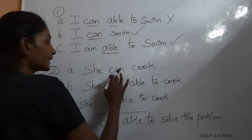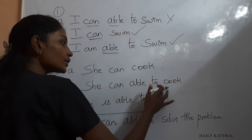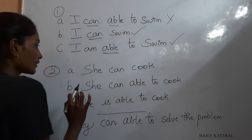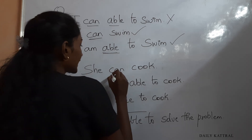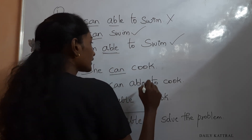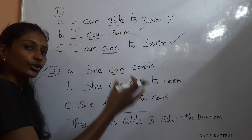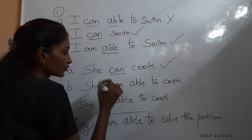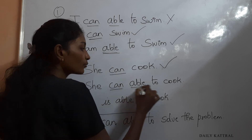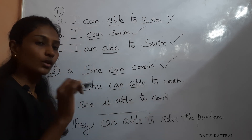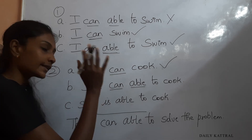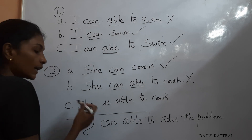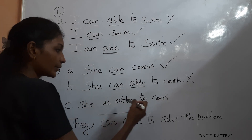Second question: Option one — 'She can cook' — correct. Option two — 'She can able to cook' — in one sentence you should use only 'can' or 'able,' not both together, so this is a mistake. Option three — 'She is able to cook' — this is correct. Either 'can' or 'able' — use only one.